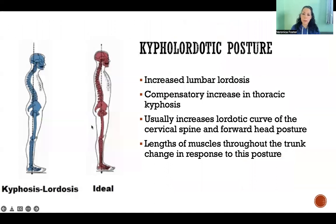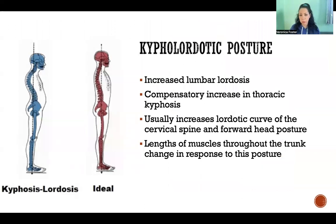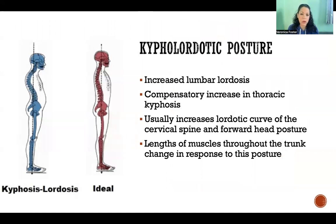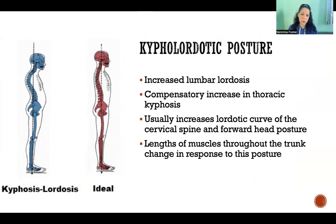When that hyperlordosis causes compensatory changes in the thoracic spine and cervical spine, then it becomes kypholordotic posture. This has the same increased lumbar lordosis we just talked about, but when that lumbar lordosis persists long enough, it causes compensatory changes in the thoracic spine — an exaggerated kyphotic curve. That usually also causes the cervical spine to increase its lordotic curve.